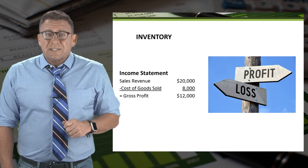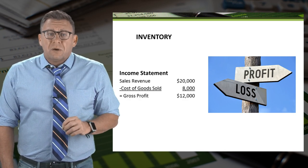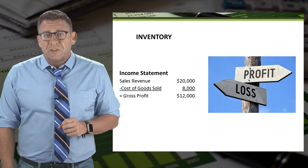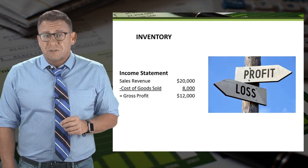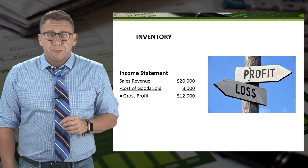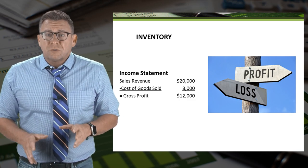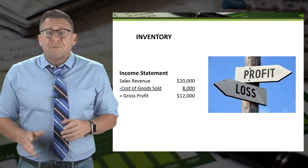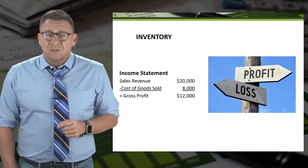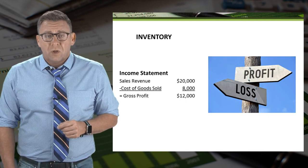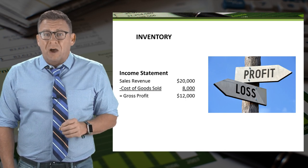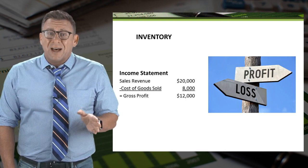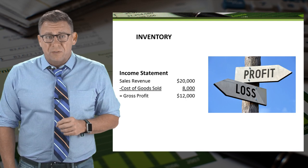Because of these two new accounts, merchandisers' income statements look a little different than those from service firms. We arrive at gross profit by subtracting cost of goods sold from sales revenue. Gross profit is the amount we sold our goods for above what we paid for them.